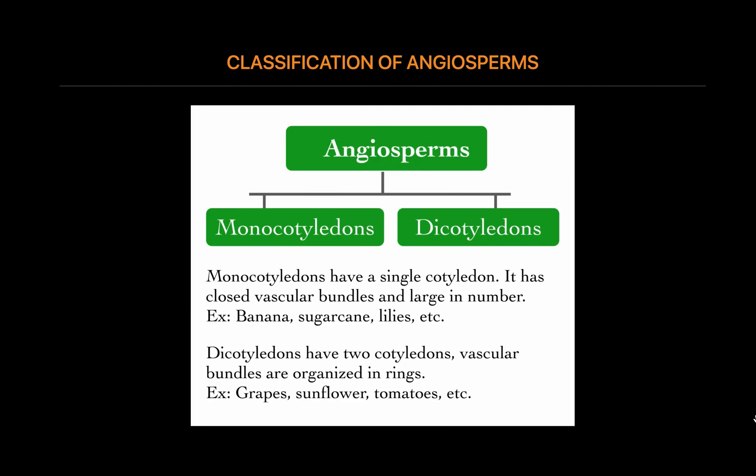Dicot seed leaves are usually rounded and fat because they contain the endosperm to feed the embryo plant. When a monocot seed germinates, it produces a single leaf that is usually long and narrow, like the adult leaf. When a dicot germinates, it produces two seed leaves which contain the food for the new plant, so they are usually fatter than the true leaves. The first true leaves are often a different shape. The stems of monocots are usually unbranched and fleshy, whereas the stems of dicots are usually tough — they can grow wider each year and are often branched.